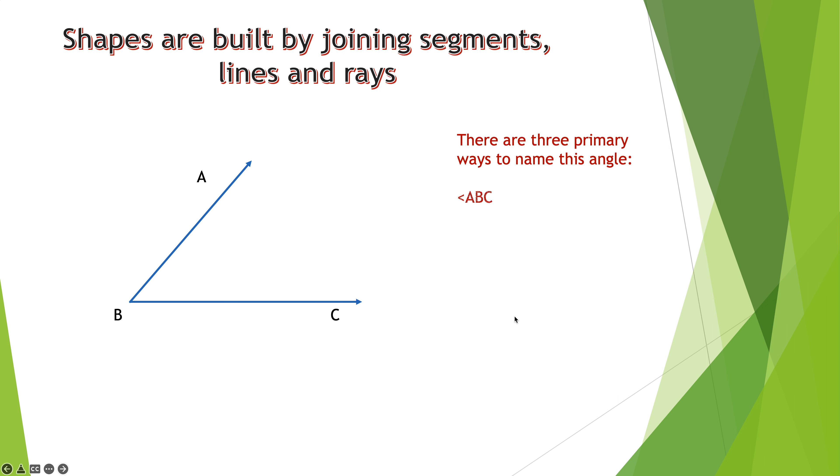There are three primary ways to name this angle. The first one is angle ABC. I go from the A down to the vertex at B over to C. Or angle CBA. I start at C, I go to B, and then up to A. As you can tell, either way it's the same exact angle we're talking about.